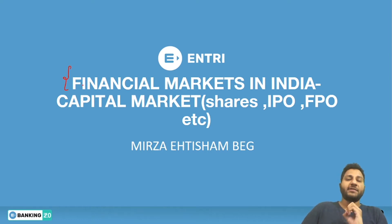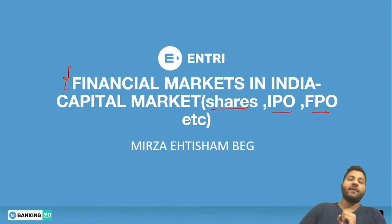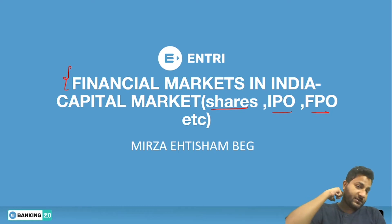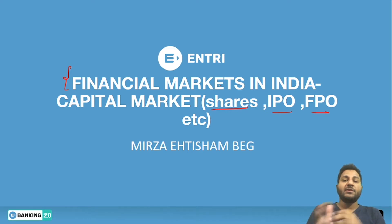This is the second part of the financial markets series. In the first part we discussed some of the entities. Now we are going to discuss about shares, IPO, and FPO. These three are the important ones. We will start with shares and then move towards IPO and FPO, and I'll highlight the difference between these two terms.